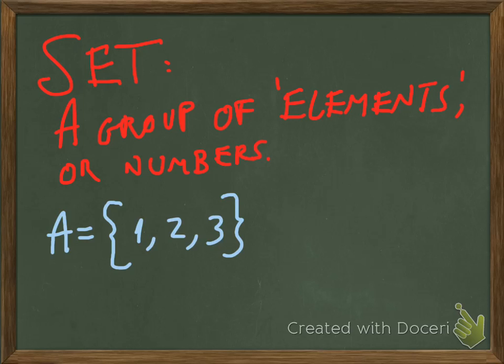As you probably know, a set is a group of elements. That's the word that we often use to describe the different things that are in a set. And most of the time in our math class, we'll be talking about sets of numbers, such as this little set that I drew here: one, two, and three.